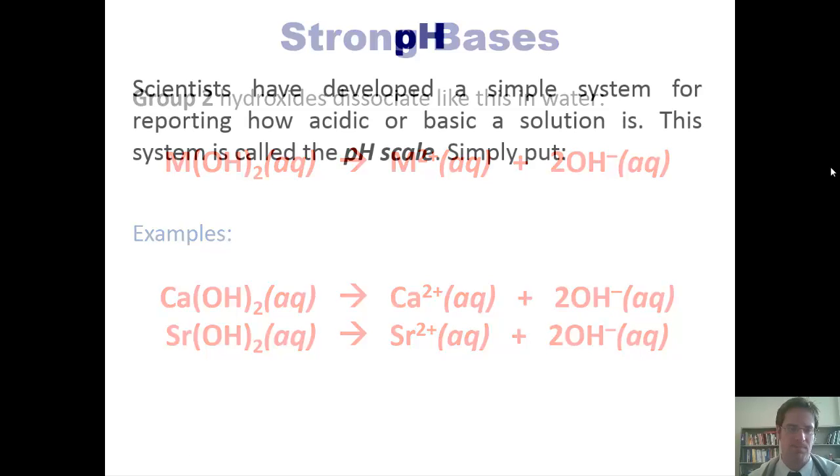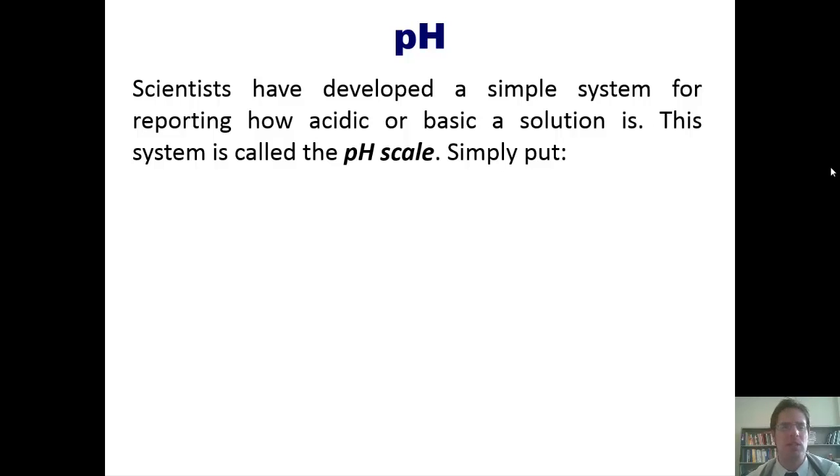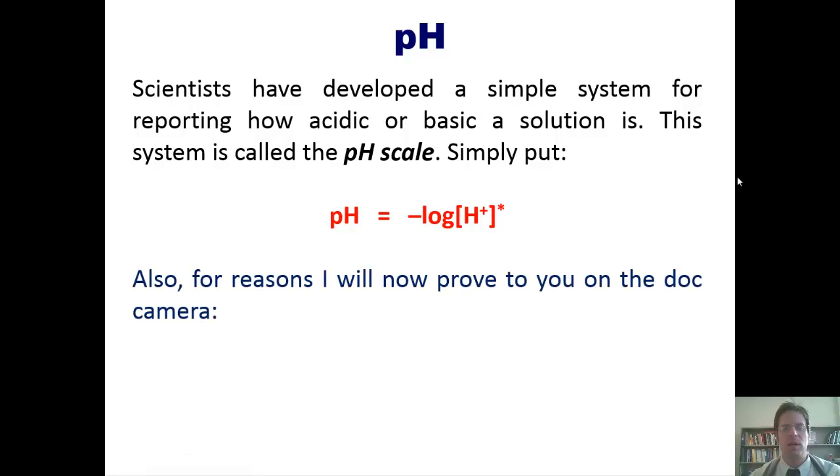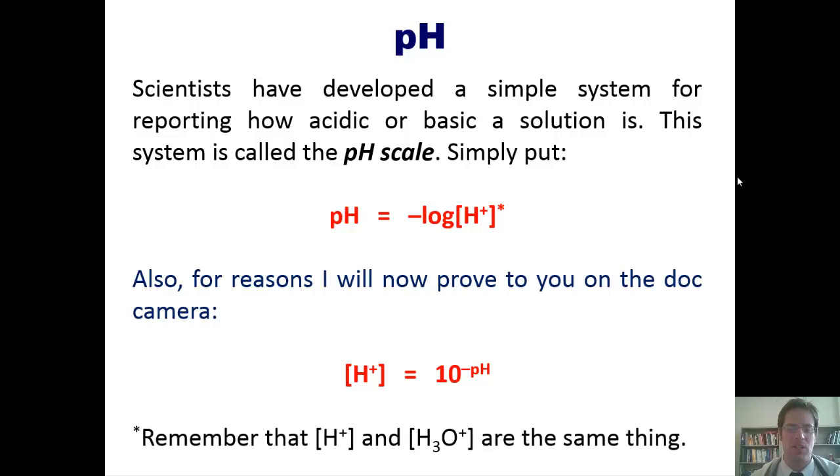Now I'll teach you about pH. Scientists have developed a simple system for reporting how acidic or basic a solution is. This system is called the pH scale. Simply put, pH mathematically is equal to the negative log of H+. Also, for reasons that I will now prove to you on the board, the concentration of H+ is equal to 10 raised to the negative pH. Please remember once again that H+ and H3O+ are sort of the same thing.